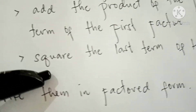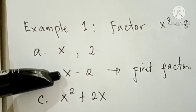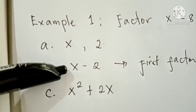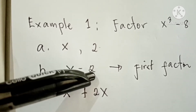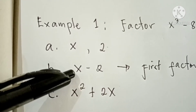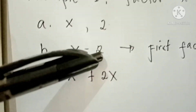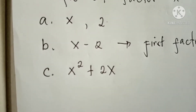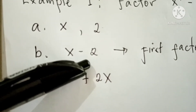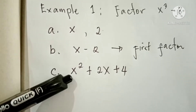Next, square the last term of the first factor — that is the second term, 2. We square it by multiplying it by itself. 2 times 2 equals 4. So the result is 4.